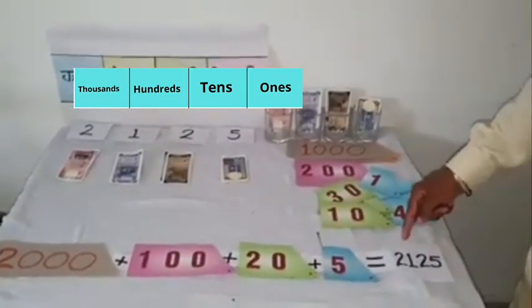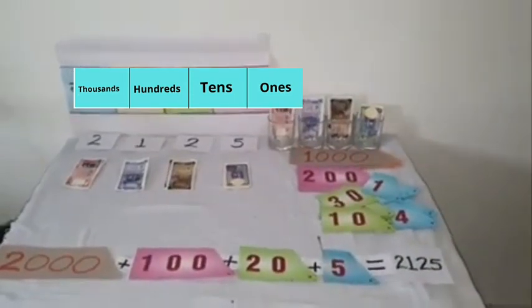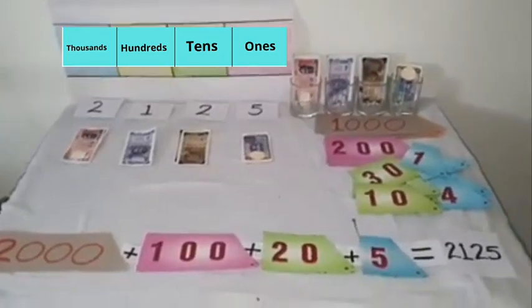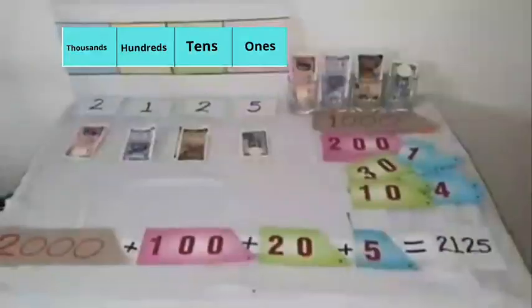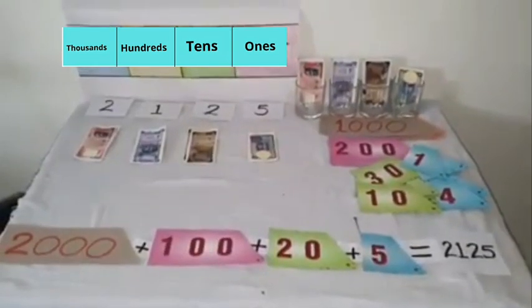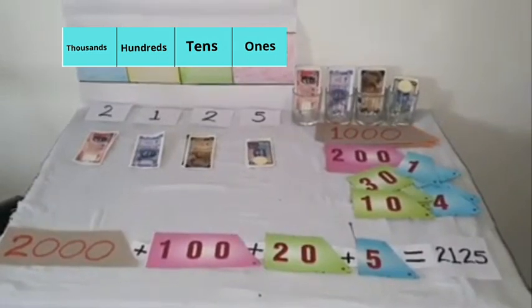So, this is clear. The place value and expanded form is hidden in the number itself. For your practice, get some 4-digit numbers from your surroundings. Try to find out the place value of digits in it and the expanded forms of these numbers also. This is all for today. Take care of yourself. Thank you.